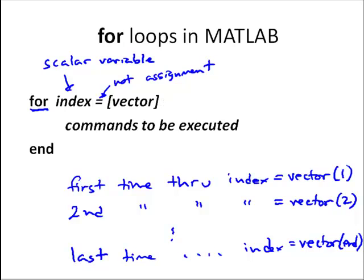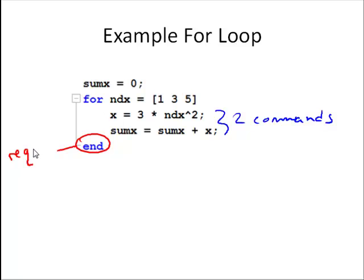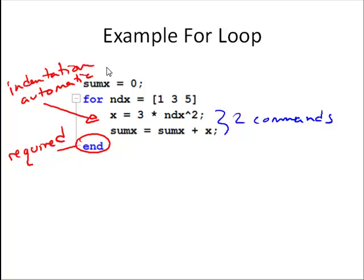Here's a more concrete example. We pre-define some x, then we have 'for index equals 1, 3, 5'. There are two commands inside, and everything inside the for loop is executed sequentially, just like what we've been doing. We always have to have the 'end' statement — end is required for for loops. Also note the indentation: it will happen automatically in the M file editor and is considered best practice, as it helps visualize which commands are inside the loop.